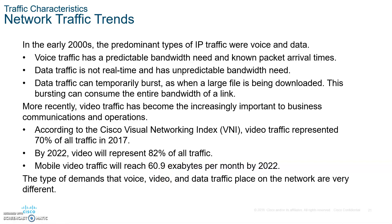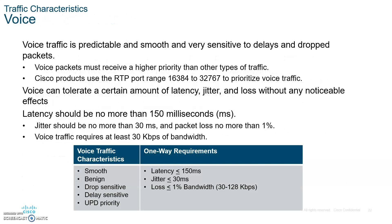If you're downloading a file and watching a real-time video at the same time, you want the video to come straight to your device and the file download to wait. For voice, it should be smooth, benign, drop-sensitive, delay-sensitive, and UDP priority. Jitter should be no more than 30 milliseconds, and packet loss has to be less than 1%. Voice traffic requires at least 30 kilobits of bandwidth, which is not a big deal — if you're connecting at 100 megabits per second, 30 kilobits is nothing.